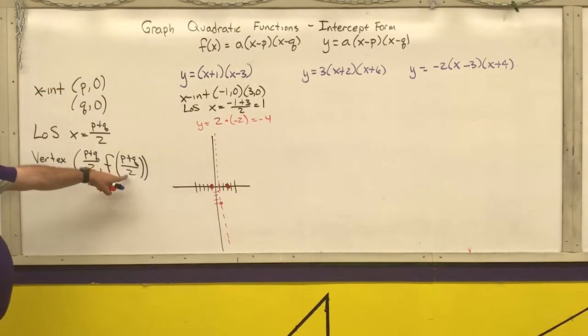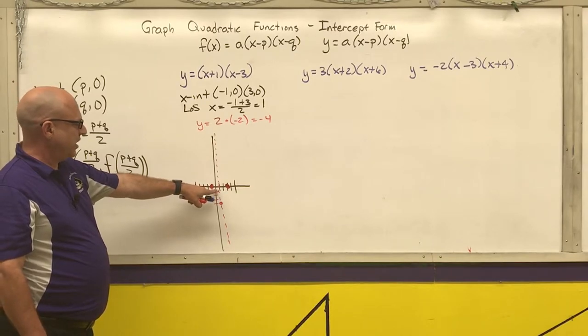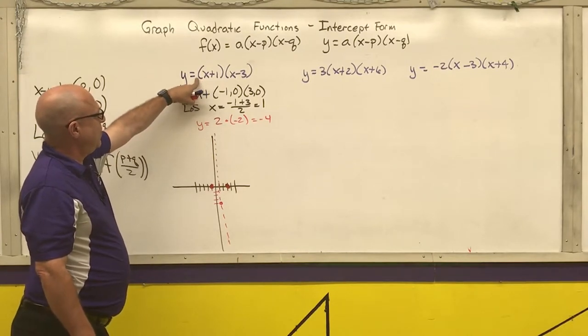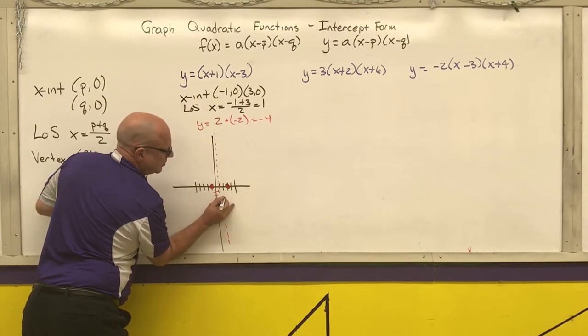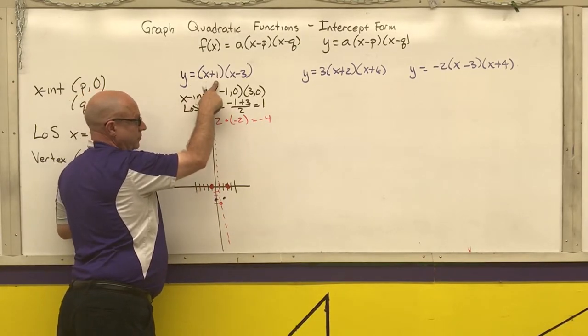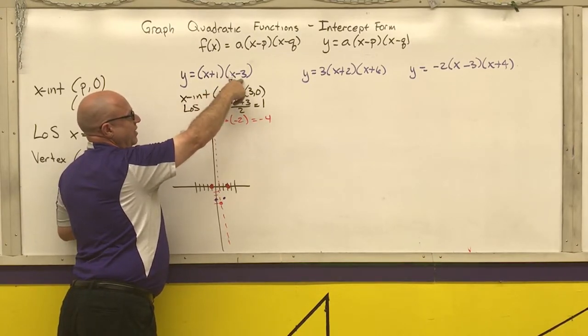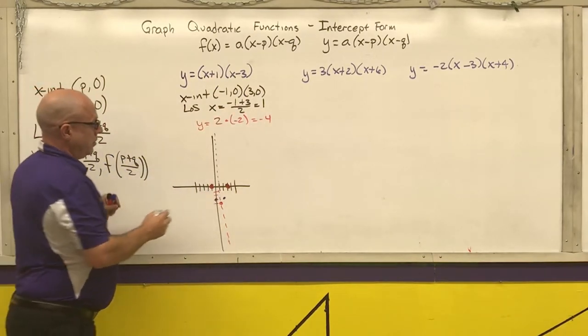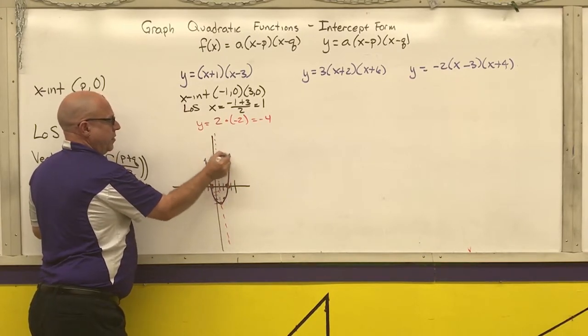So I took that, put it into my original equation. Now I just need one more point. Well, let's put a 0 into the function because that's 1 away. Well, I really don't have to because I can go over 1, up 1. And we're going to check that by putting a 0 into the function. Put a 0 here, I get 1. Put a 0 here, I get negative 3. 1 times negative 3 is negative 3. And that gives me the graph of that parabola.